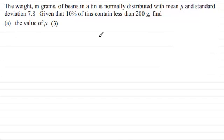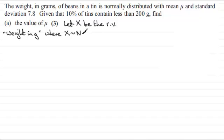Now when I get something like this, first of all I want to define a random variable. So I'm going to say let X, capital X, be the random variable, the weight in grams. Now that will be where X is distributed normally. We don't know the mean, so we'll just put that in as mu. And then the second parameter here is always the variance, that is the standard deviation squared. So I'm just going to write 7.8 squared there, rather than actually work out the value of 7.8 squared.